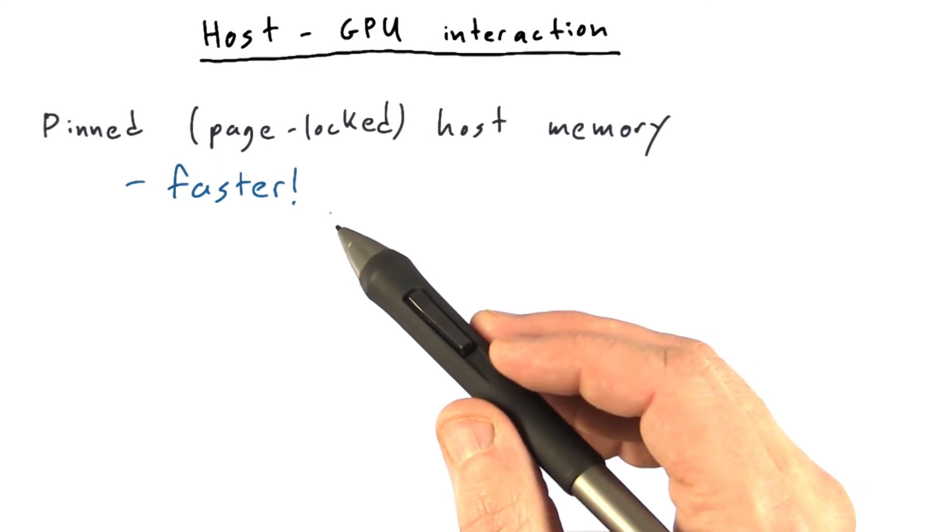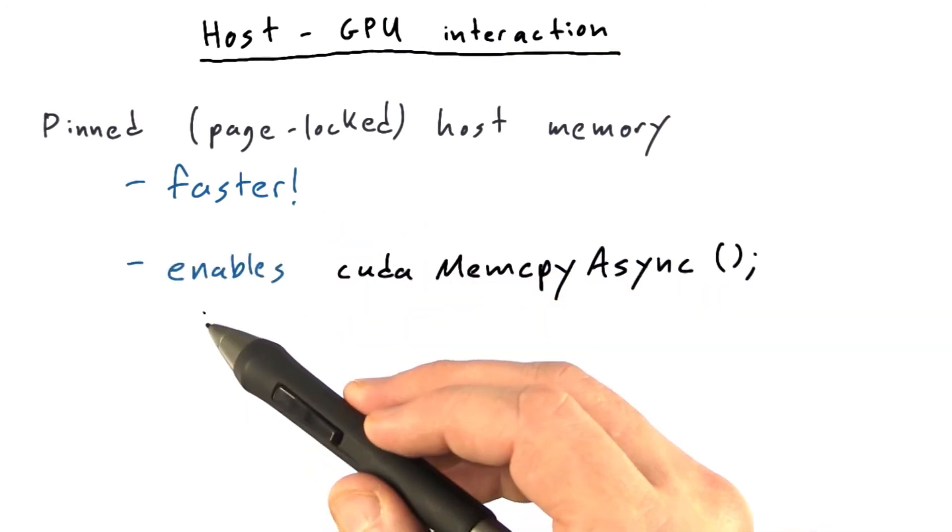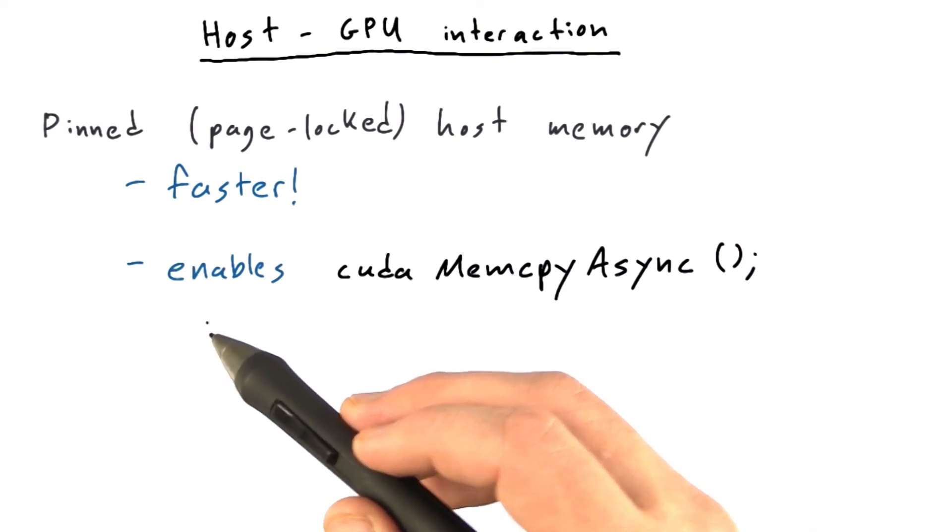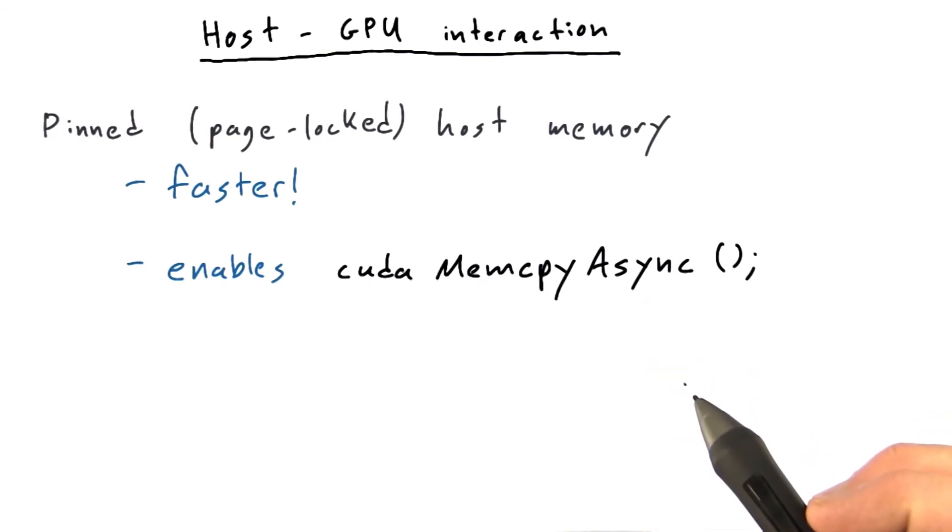Memory transfers from the host to the device can go faster if you pin the memory first. And if you're transferring pinned memory, you can use the asynchronous memory transfer, CUDA memcopy async, which lets the CPU keep working while the memory transfer completes.